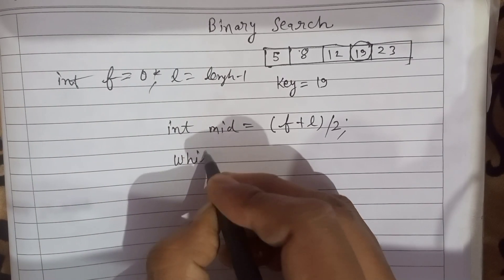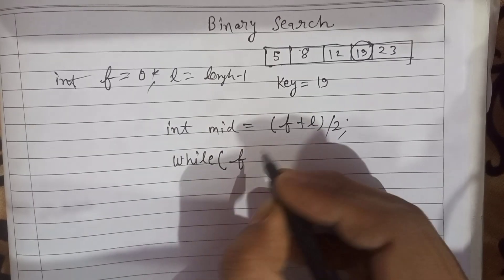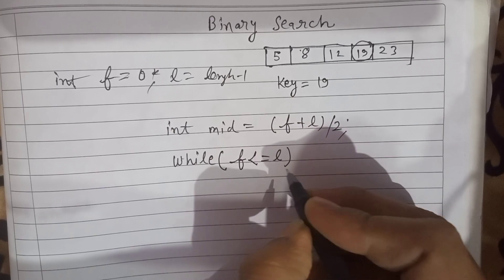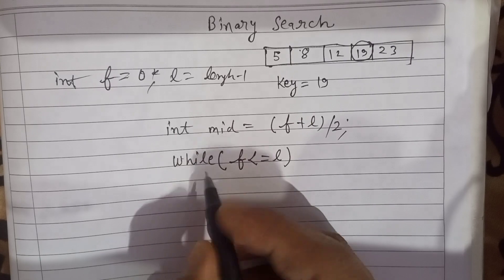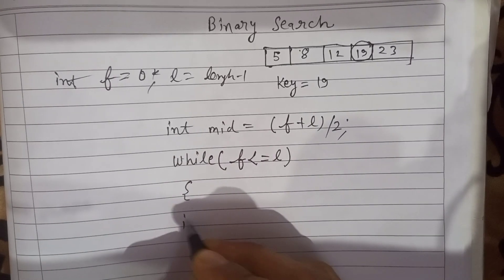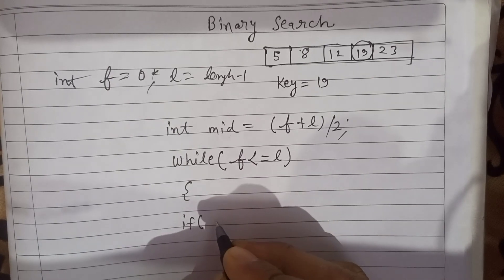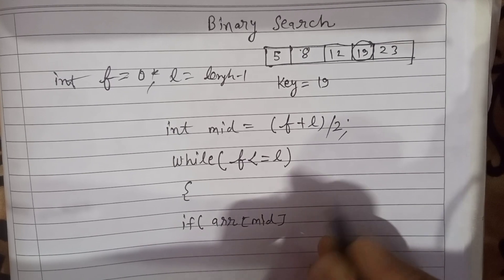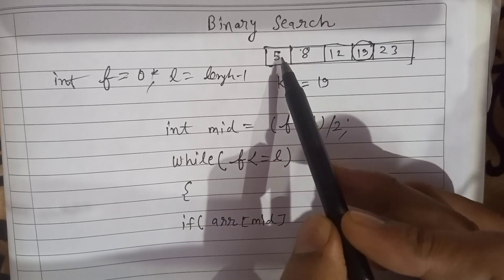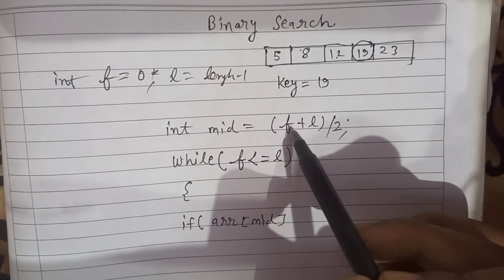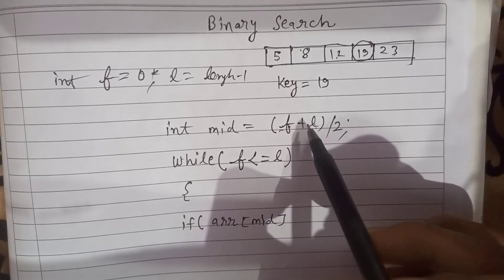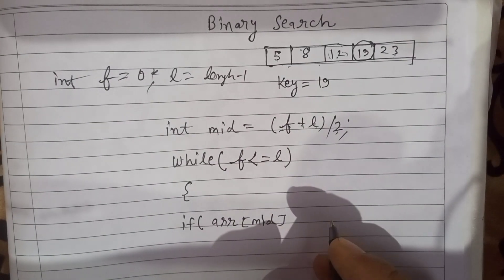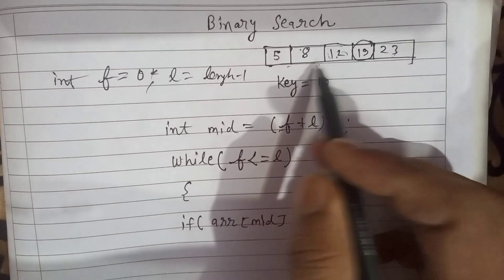After that we run a loop — here we run a while loop. The loop will run as long as the beginning value is less than or equal to the last value. We apply an if condition: our array is named arr, and we look for the middle position. Suppose indices are 0, 1, 2, 3, 4 — so 0 plus 4 = 4, divided by 2 = 2. So this index 2 is our mid value, meaning our third element.